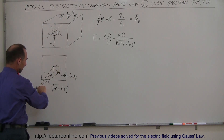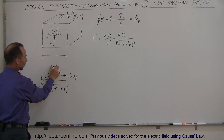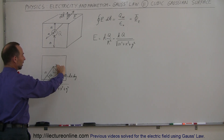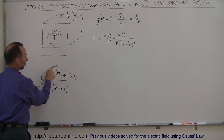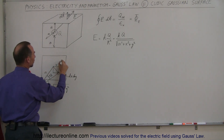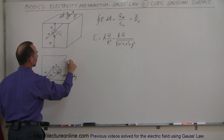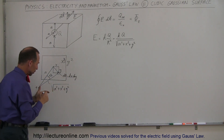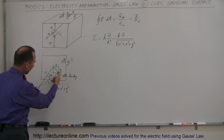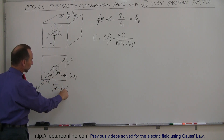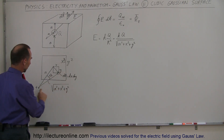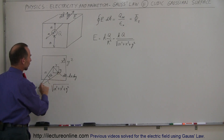To find the distance from the charge to an arbitrary point on the face, notice that we have a distance x away from the center in one direction and a distance y in another direction. So the in-plane diagonal across the face is the square root of x squared plus y squared. The full diagonal distance from the charge to that point on the surface is the square root of A squared plus x squared plus y squared.